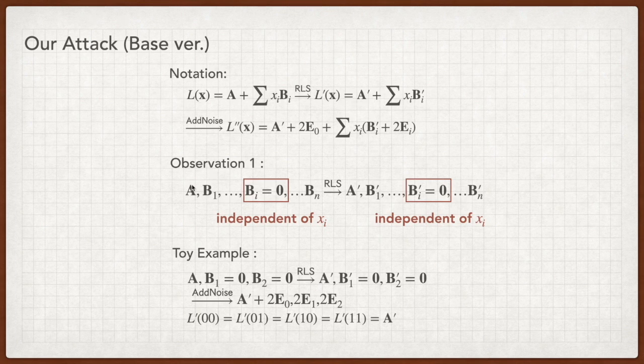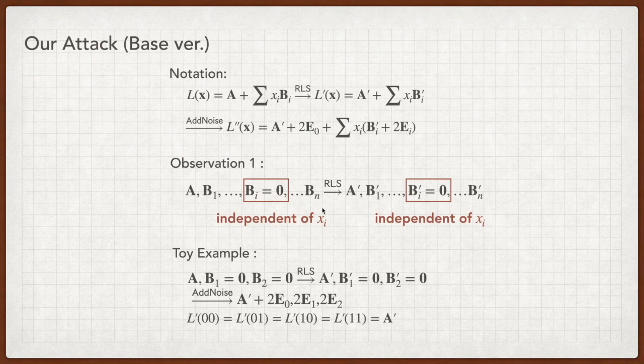The key observation of our attack is that the RLS cannot always inject randomness into every matrix. To be specific, if BI is a zero matrix, which means the program has nothing to do with XI, the resulting BI prime matrix of RLS will also be a zero matrix.